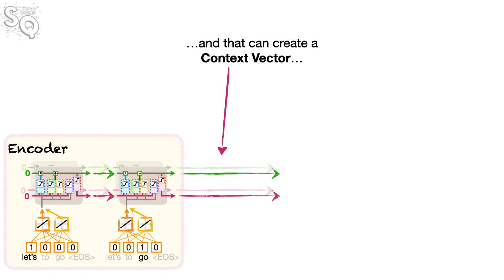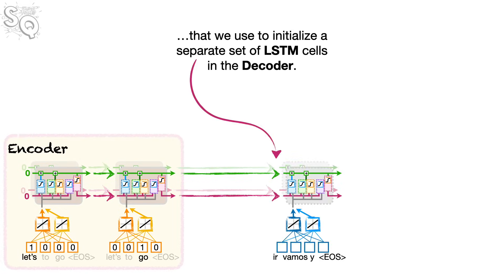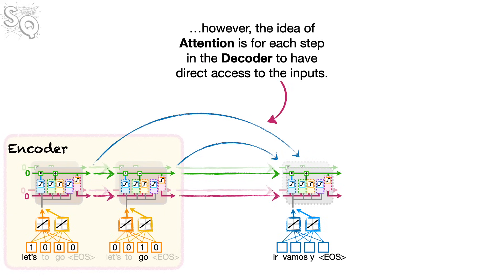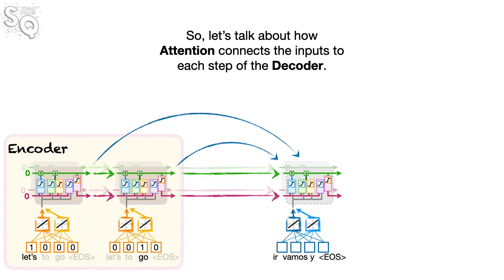And that can create a context vector that we use to initialize a separate set of LSTM cells in the decoder. Note, all of the input is jammed into the context vector. However, the idea of attention is for each step in the decoder to have direct access to the inputs. So, let's talk about how attention connects the inputs to each step of the decoder.